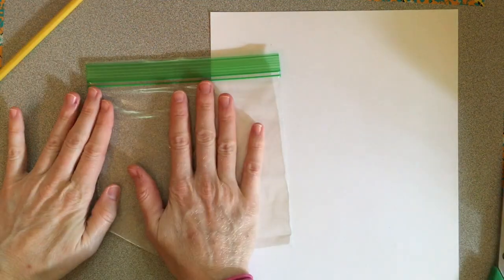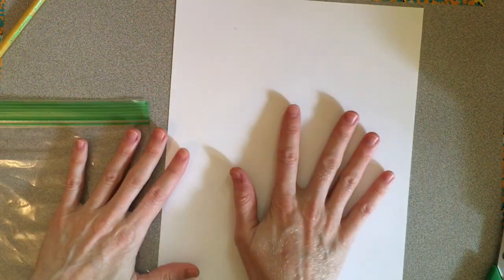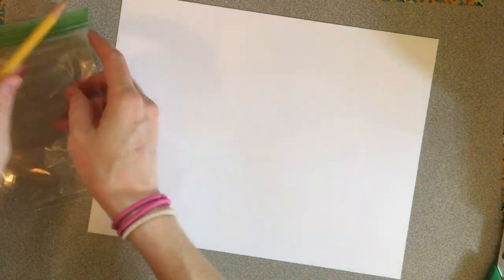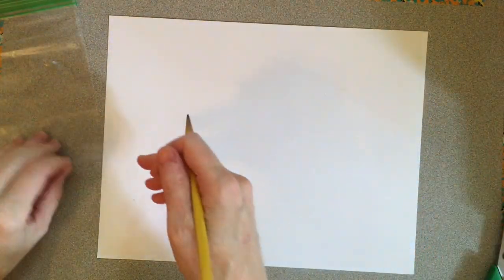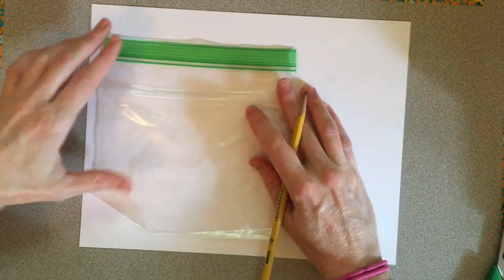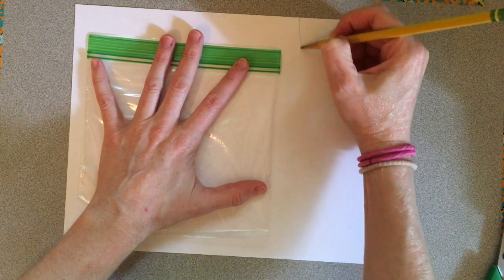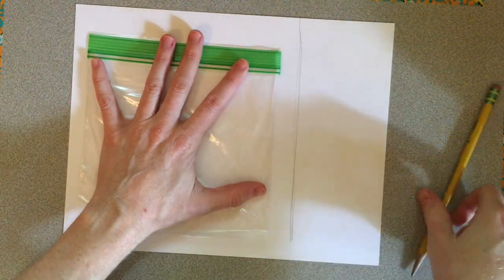The ziploc bag is going to be the inside of your greenhouse and the paper will create the frame and that's where we'll start right now. To make the outside of the greenhouse I like to use that plastic bag as a template. Just place it on my paper over to the side. We're going to draw a line just slightly larger than the bag and then cut down that line.